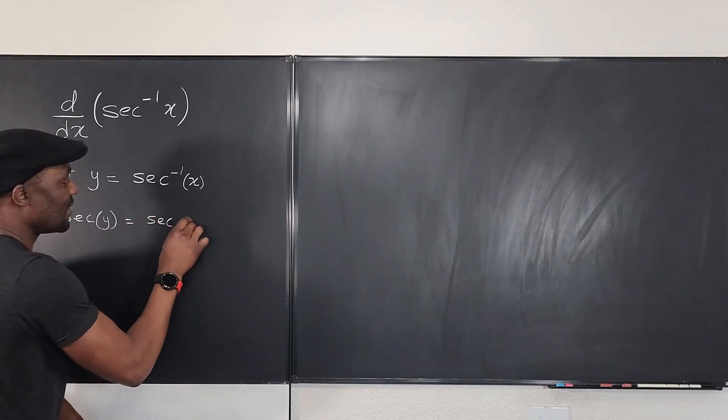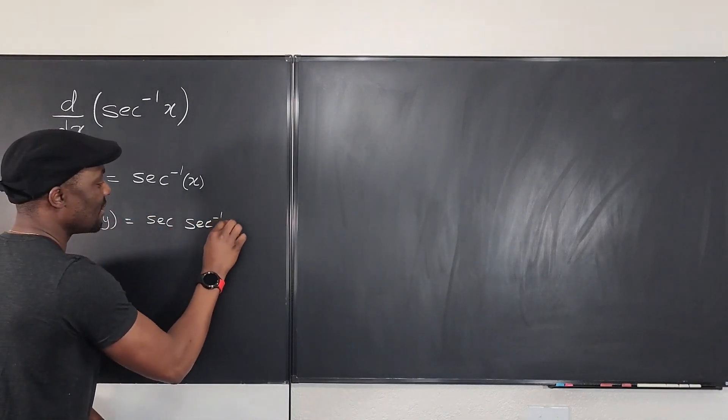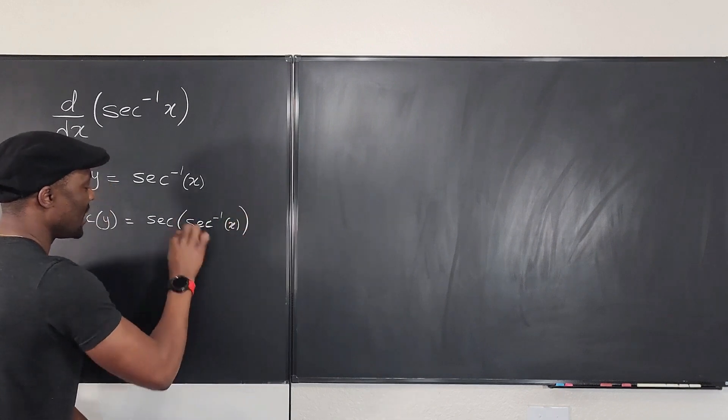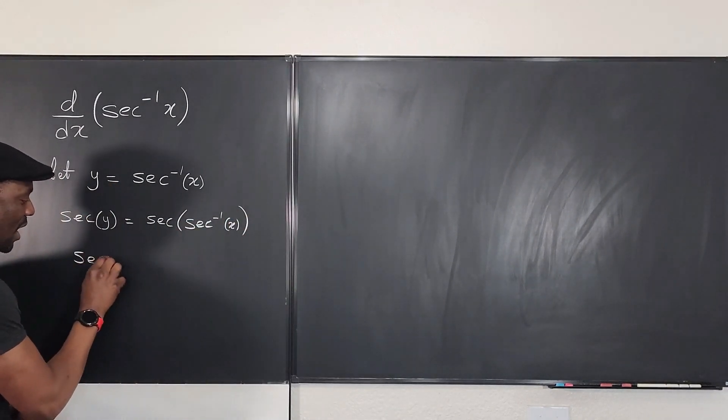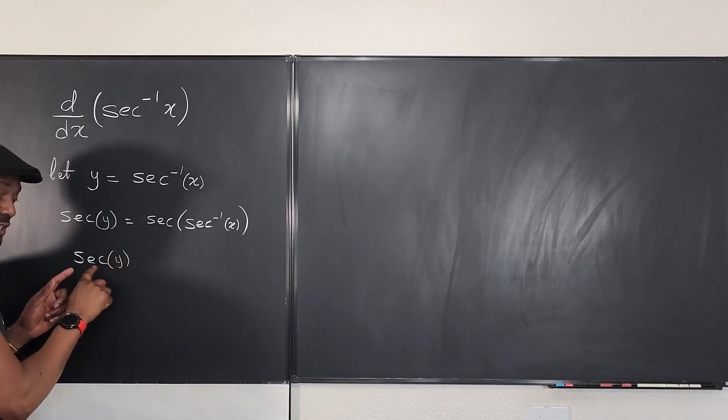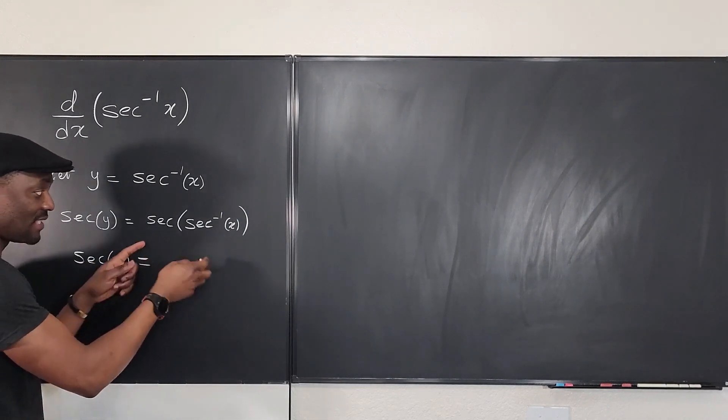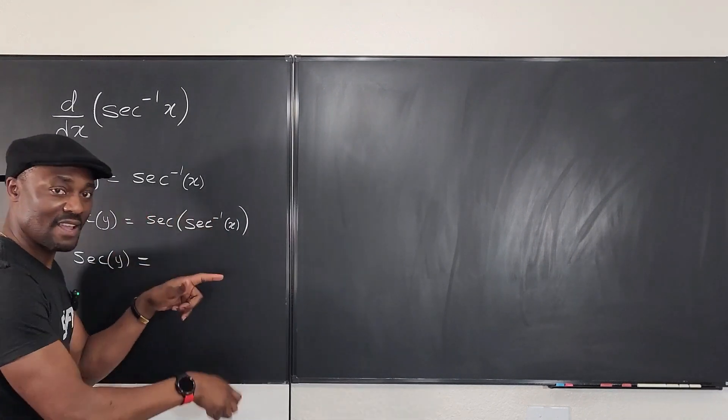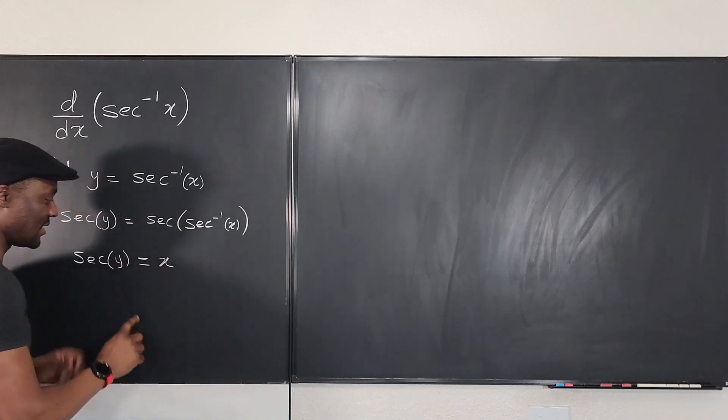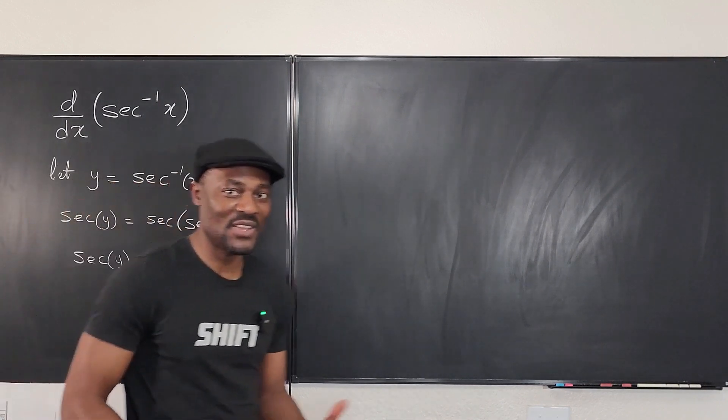See what it gives me—it just gives me secant y, which I know how to differentiate. And on the right hand side, because it's the inverse of the inverse, it just gives me back my x. Now this looks like something that I can deal with.